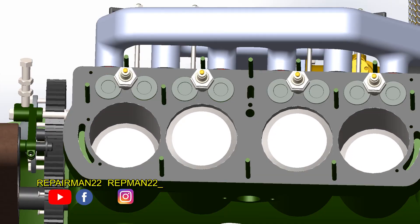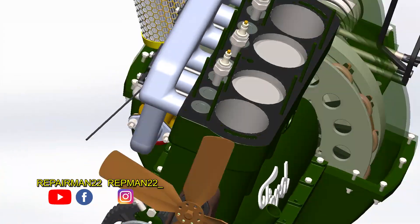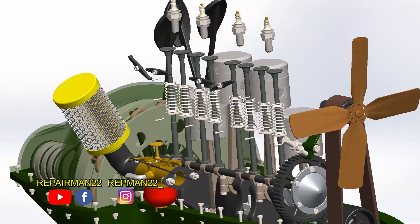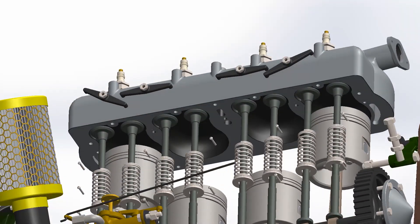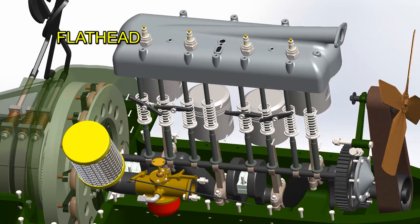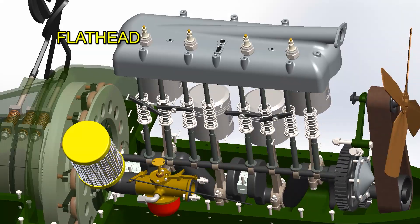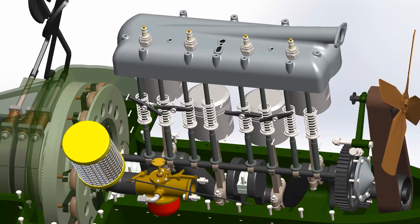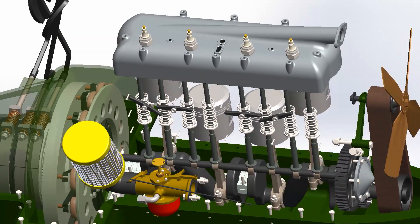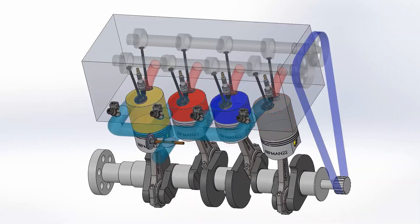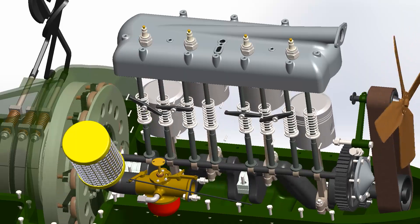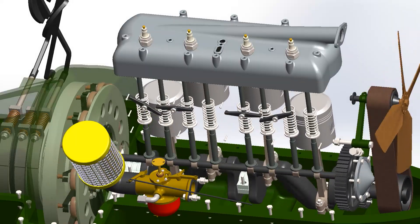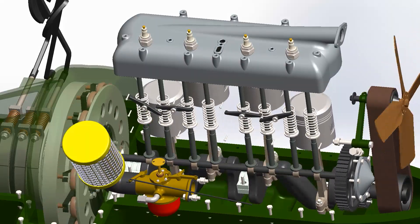The valves are not in the head — they are inverted and in the block, guaranteeing there is no interference between piston and valve. The cylinder head is removable to allow repairs if necessary, and it is a flathead type that only contains the spark plugs. While this type of head is very inexpensive and reliable, it reduces efficiency drastically compared to a modern car. Although for the Ford T, which rotates at only 1,800 RPM, the losses are low.